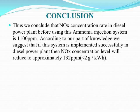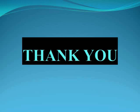Conclusion: We conclude that NOx concentration in the power plant before using the ammonia injection system is around 1100 ppm. According to our report, if we implement the SCR system successfully in this power plant, the NOx concentration level will reduce to approximately 130 ppm, which is less than 2 grams per kilowatt hour. Thank you.